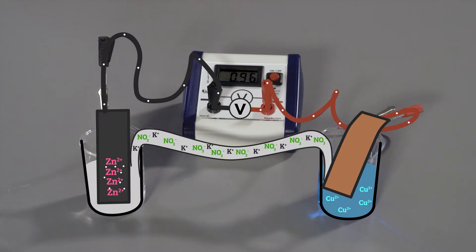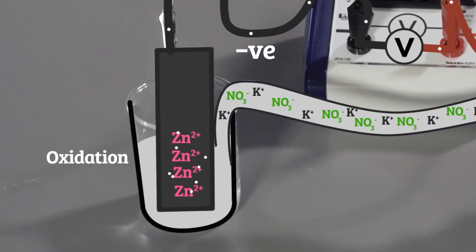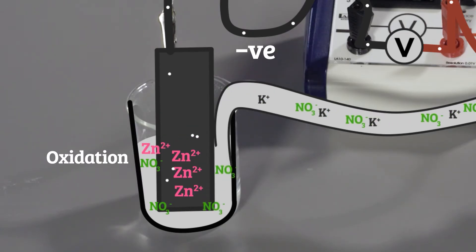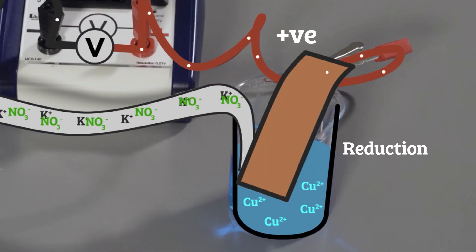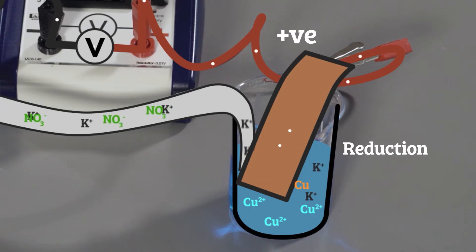The salt bridge contains ions in solution that are free to move. Oxidation occurs at the zinc half cell making it the negative electrode. Reduction occurs at the copper half cell causing it to be the positive electrode. Ions flow from the salt bridge to keep the charge of the solution neutral.